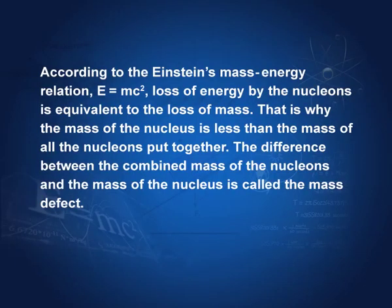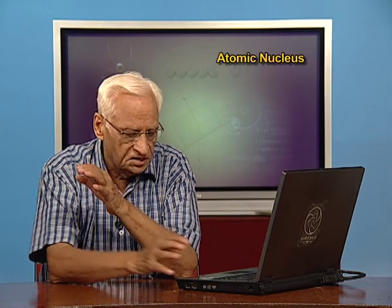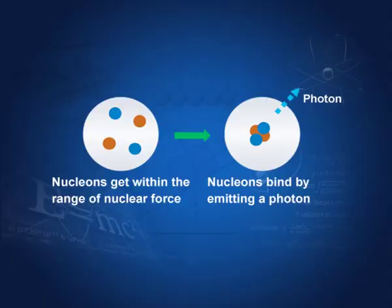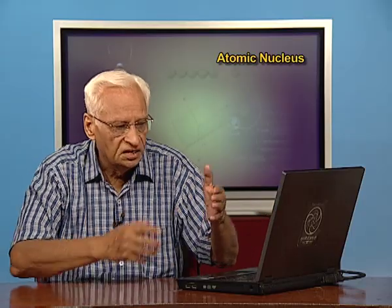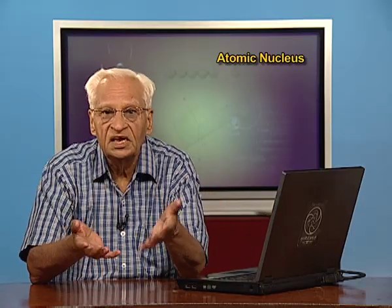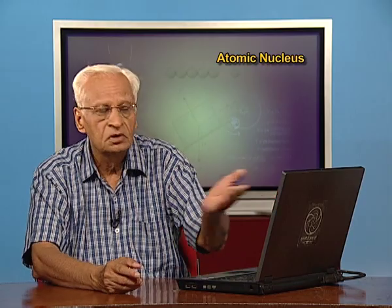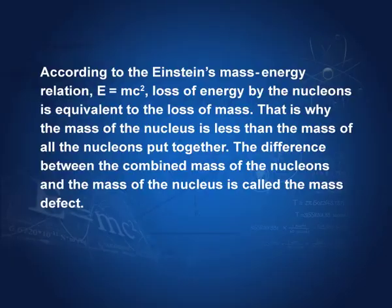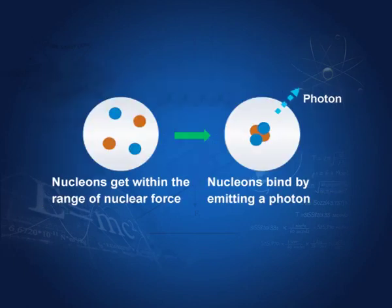According to Einstein's equation, energy equals mc squared. The loss of energy when nucleons bind together means a loss of mass according to Einstein's relation. Therefore, the difference between the combined mass of the nucleons and the mass of the nucleus is called the mass defect. These four nucleons have certain mass — four times the atomic mass unit.